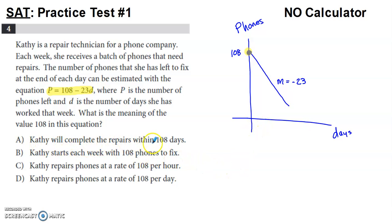She will complete repairs within 108 days. That doesn't make sense. 108 is the number of phones. So it's definitely not option A. Kathy starts each week with 108 phones to fix. I think based on the argument that we just made, she's starting here. After a certain number of days, the number of phones that she has left to fix goes down.